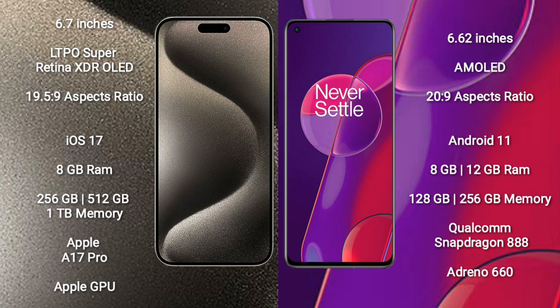iPhone 15 Pro Max runs on the iOS 17 operating system. OnePlus 9RT runs on Android 11. iPhone 15 Pro Max comes with 8GB RAM and 256GB, 512GB, or 1TB internal storage, with the Apple A17 Pro processor and Apple GPU. OnePlus 9RT comes with 8GB or 12GB RAM and 128GB or 256GB internal storage, with the Qualcomm Snapdragon 888 processor and Adreno 660 GPU.